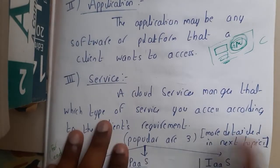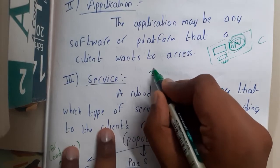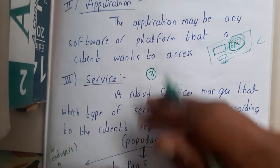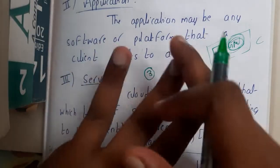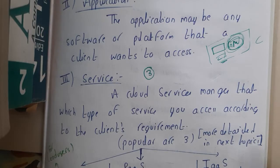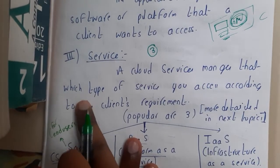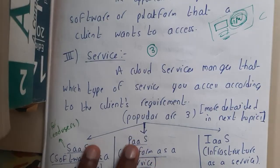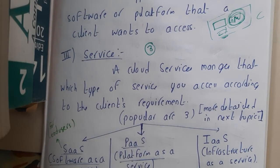Similarly, services. Basically, any cloud computing provider will provide you three types of services. We'll be discussing in detail about these three services with advantages, disadvantages, and all those things in later lectures. In this lecture, let us go through some introduction. A cloud service provider manages which type of service you are going to use.